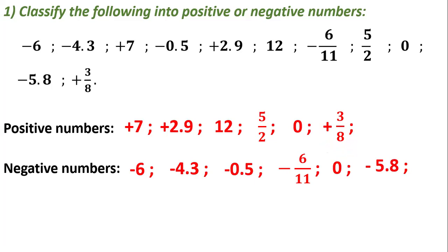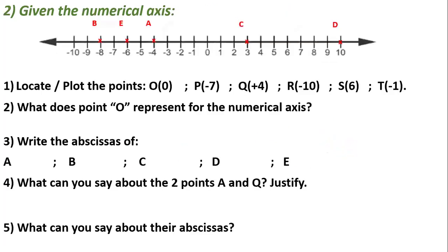Question number two: we are given the numerical axis. On the numerical axis we have signed numbers. Zero is in the middle; to the right of zero we have all the positive signed numbers, and to the left of zero we have all the negative signed numbers. Part one: locate or plot the following points on the axis.